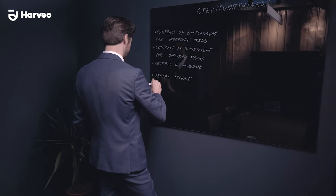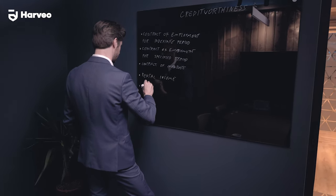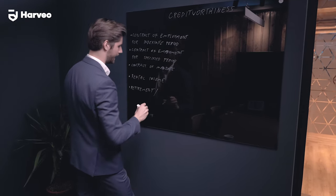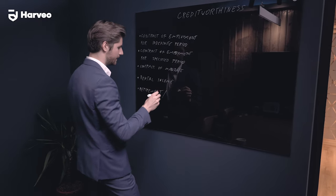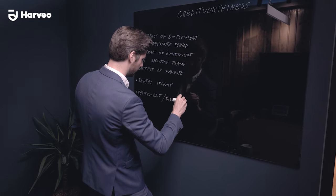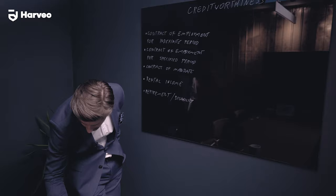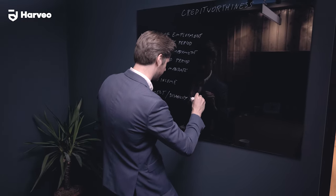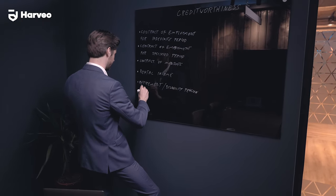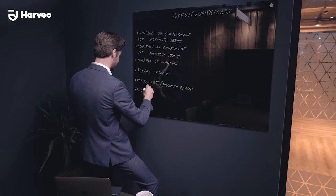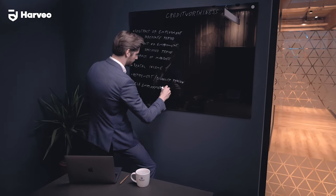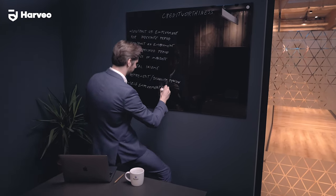Then there can be retirement or disability pension. And also we can have business or self-employment — it's very common — in brackets: own business.